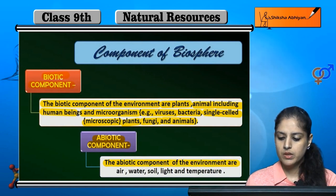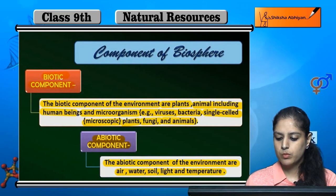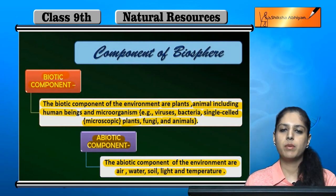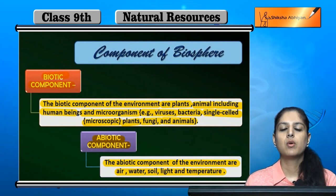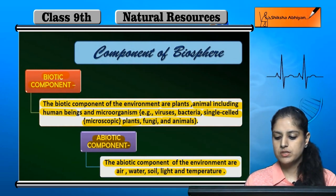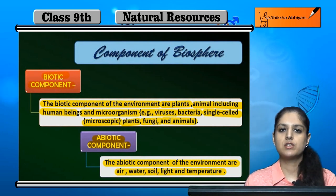Abiotic components of the environment are air, water, soil, light, and temperature. Those natural things that are non-living are called abiotic components. Water, air, soil, light, and temperature — non-living elements that are important for the sustenance of life — are called abiotic components.